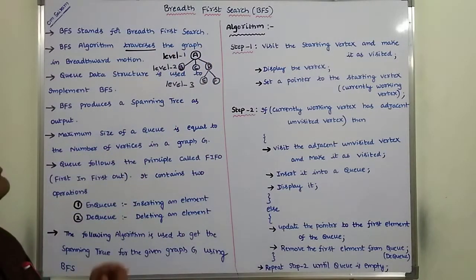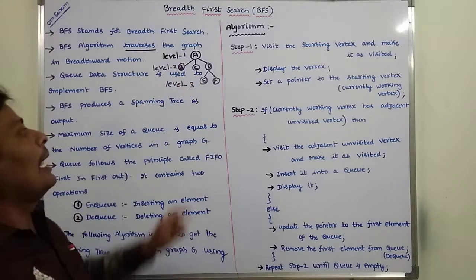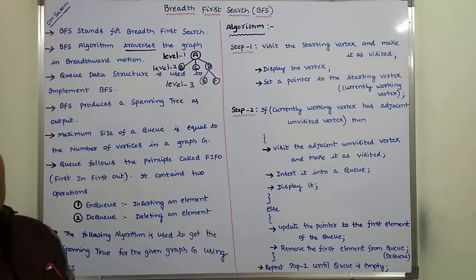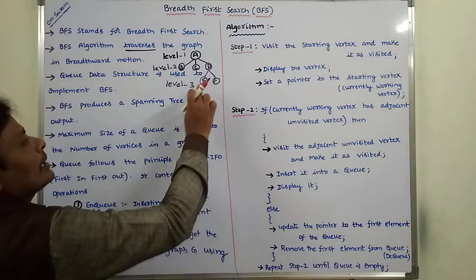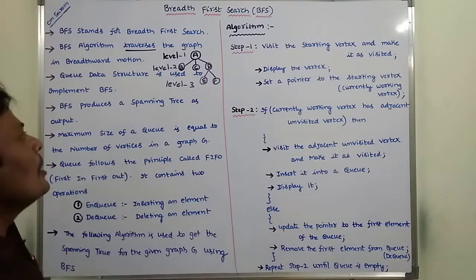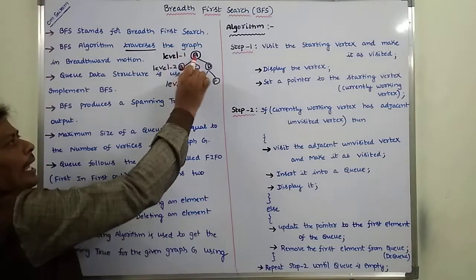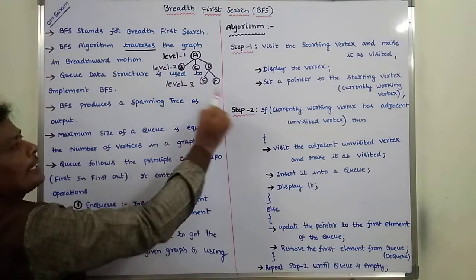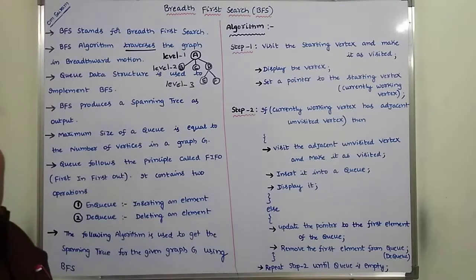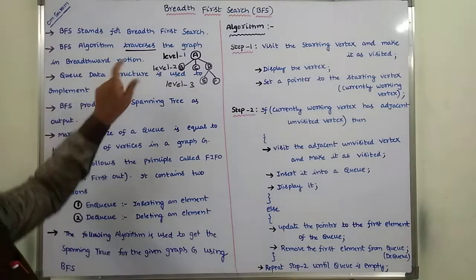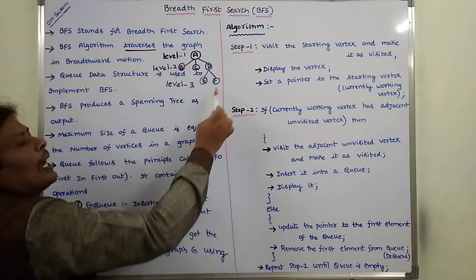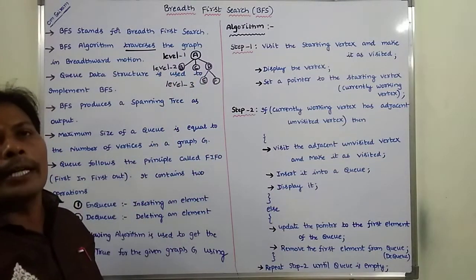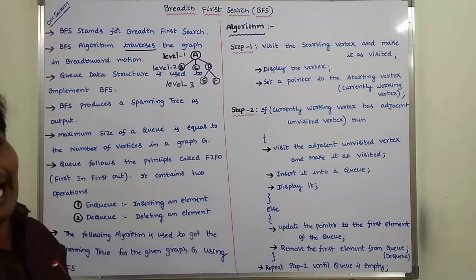After that, we visit all the vertices in level 2: B, C, D. After that, we visit all the vertices in level 3: vertex E and vertex F. So the order of BFS is A, B, C, D, E, F. In this way, we visit all the vertices in a given graph. That type of motion is called breadth-first motion, which is nothing but level-by-level ordering of visiting vertices in a graph.